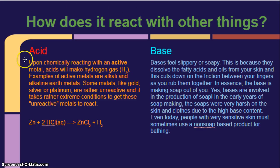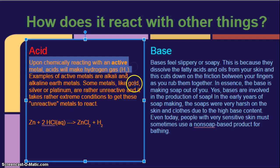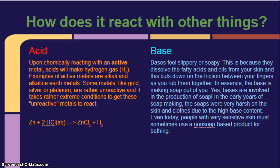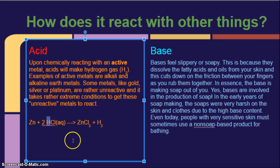How does it react with other things? Draw another line. Acid. Upon chemically reacting with an active metal, acids will make hydrogen gas. So this sentence, add to your notes. Examples of active metals are alkali and alkaline earth metals. So, which groups on the periodic table? Groups one and two, way on the left. Some metals like gold, silver, or platinum are rather unreactive, and it takes rather extreme conditions to get those unreactive metals to react. So, here it shows we have a metal plus an acid. Our clue that this is an acid is it starts with an H. It makes a salt, and in this case, it makes hydrogen bubbles.